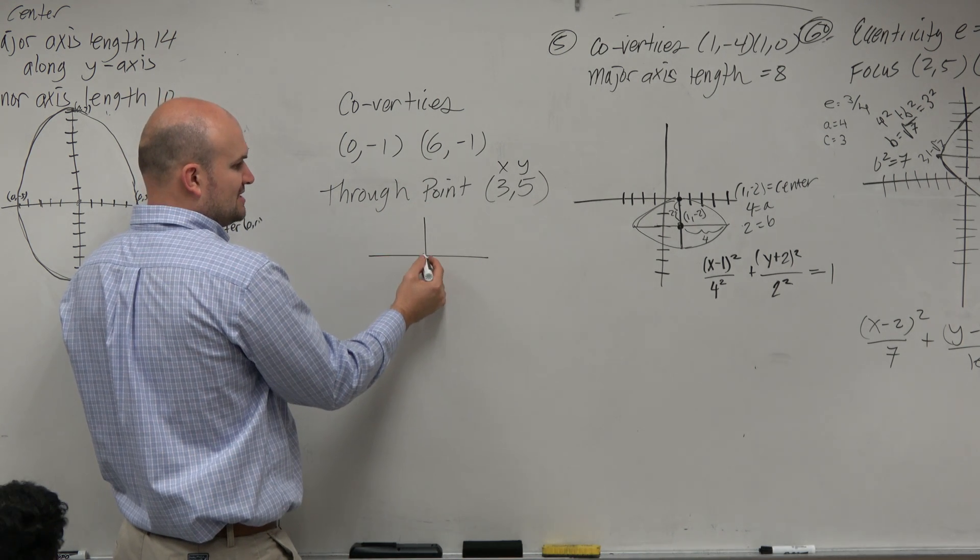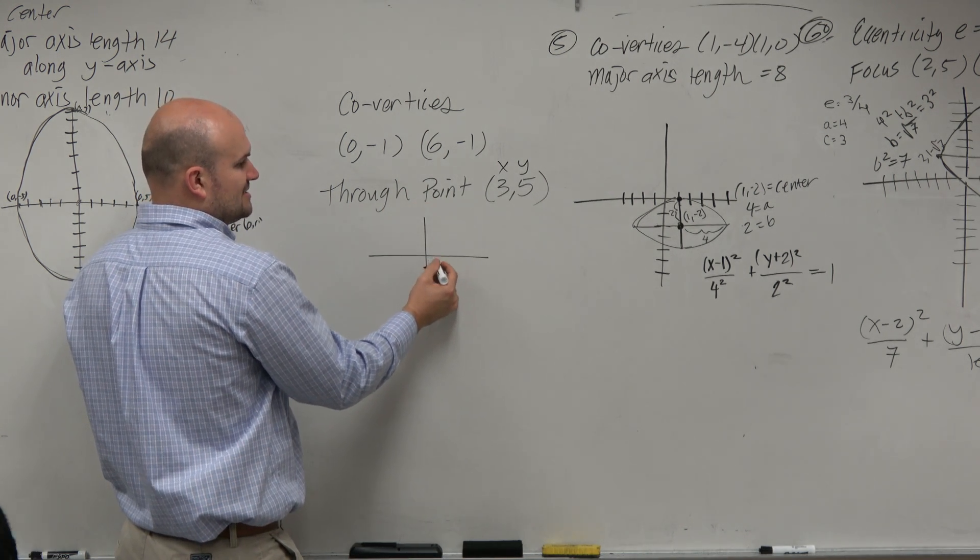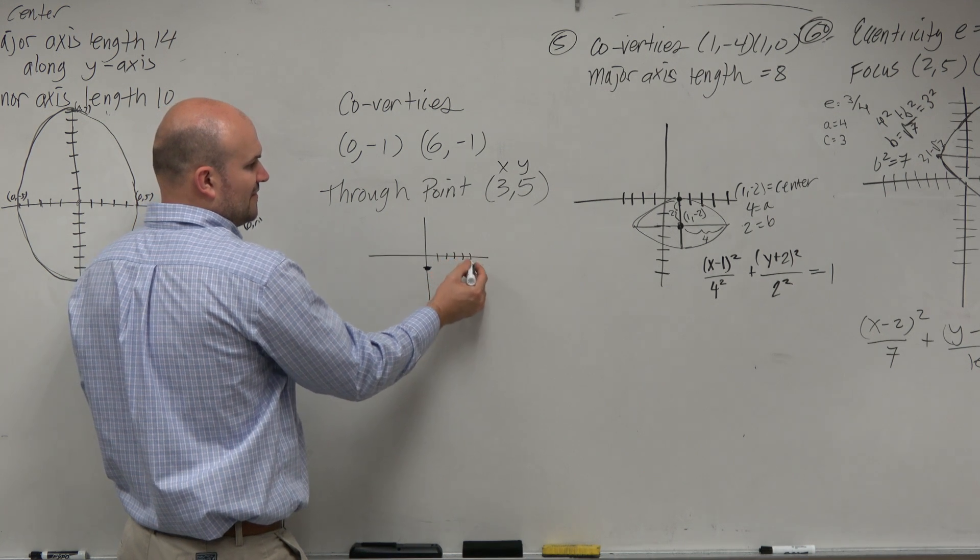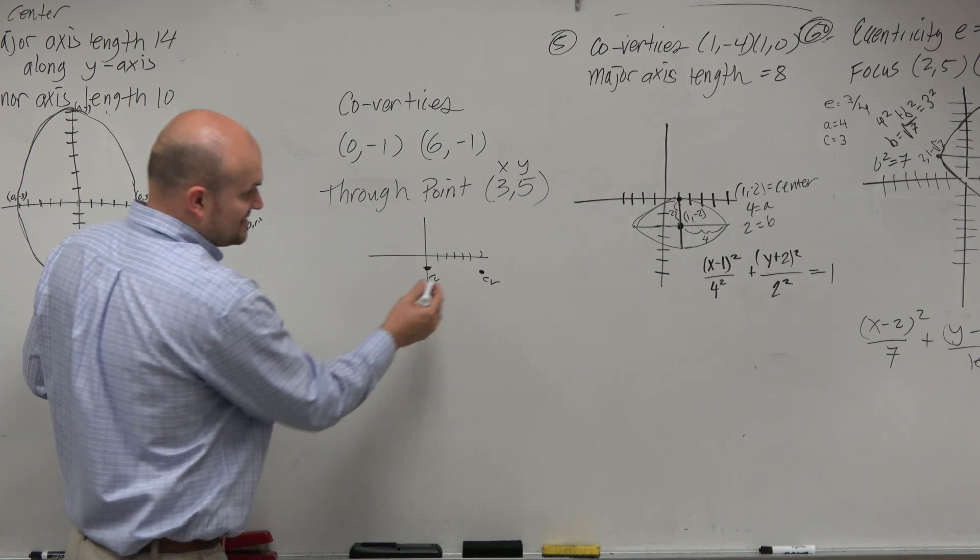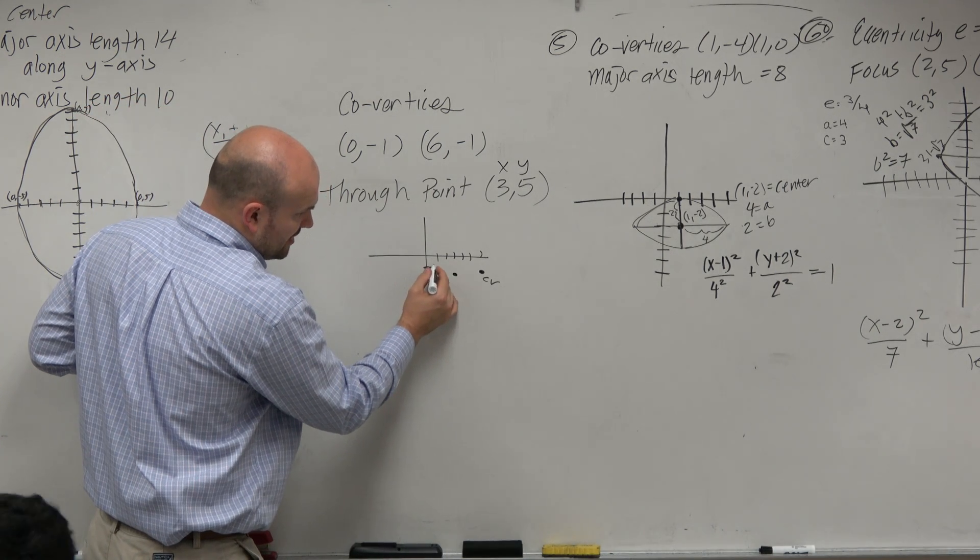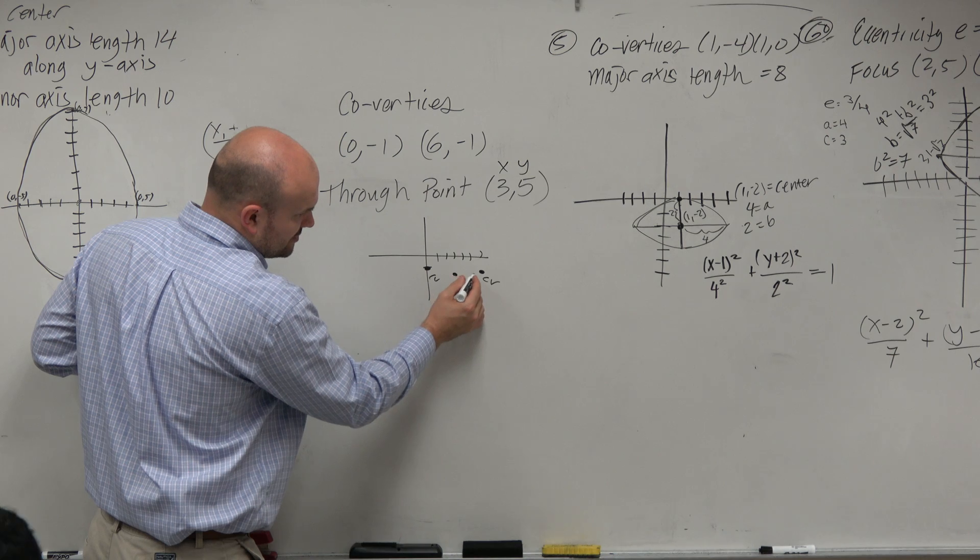So my co-vertices are at (0, -1) and at (6, -1). Based on this information alone, I can identify my center, which is going to be 1, 2, 3.